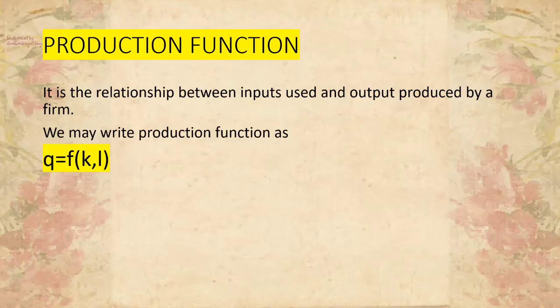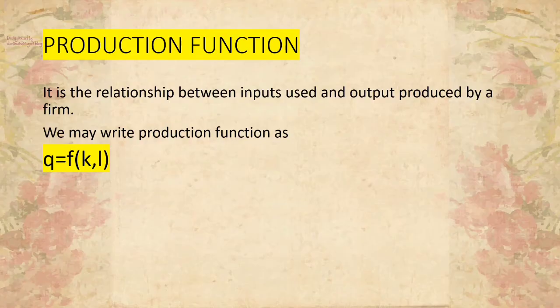The last concept is the production function. These are coming under the basic concepts for this chapter. Before explaining the production function, there are four factors of production: land, labor, capital, and organization. These are your four factors of production.